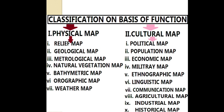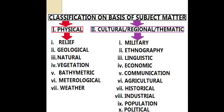The classification on the basis of function can be divided into two groups: physical maps and cultural maps. Classification on the basis of subject matter can also be divided into physical and cultural, regional, or thematic maps. Thematic maps are specially designed to show a particular theme connected with a specific geographic area, such as vegetation, climate, or population density. Cultural maps, most atlas maps, industrial, agriculture, military, and linguistic maps all fall in the thematic map category.